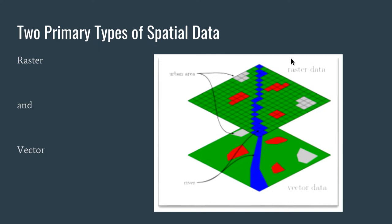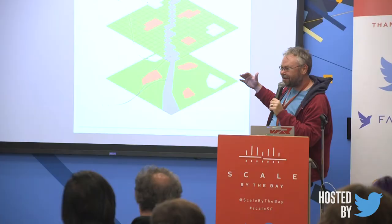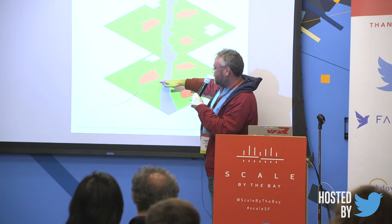I got a master's degree in geographical information systems and worked in that field for five years. I took a career change, and then just recently — the last three years or so — it picked up again. The discipline hasn't changed much but the tools and languages have, and it's wonderful what you can do now. There are two primary types of spatial data: raster and vector.